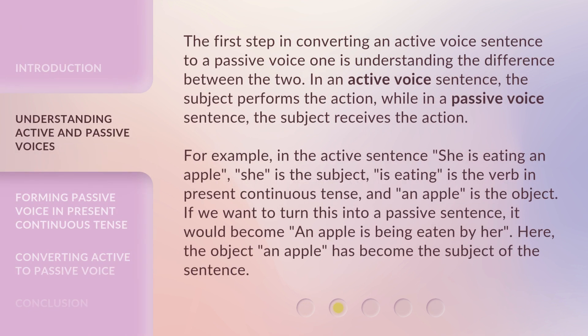The first step in converting an active voice sentence to a passive voice one is understanding the difference between the two. In an active voice sentence, the subject performs the action, while in a passive voice sentence, the subject receives the action. For example, in the active sentence 'she is eating an apple,' she is the subject, 'is eating' is the verb in present continuous tense, and 'an apple' is the object. If we want to turn this into a passive sentence, it would become 'an apple is being eaten by her.'